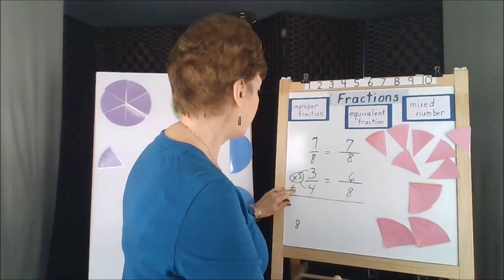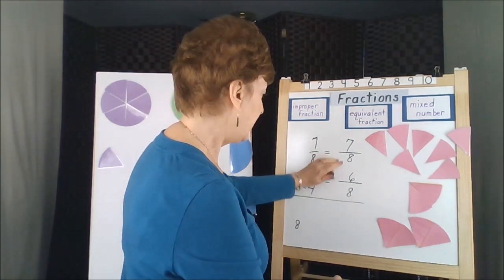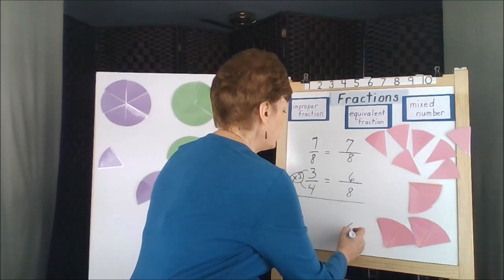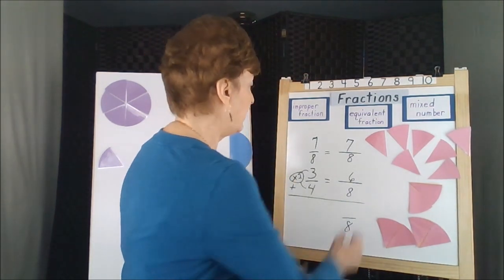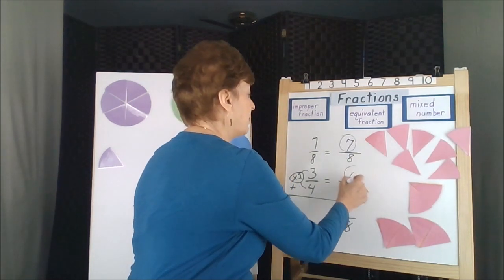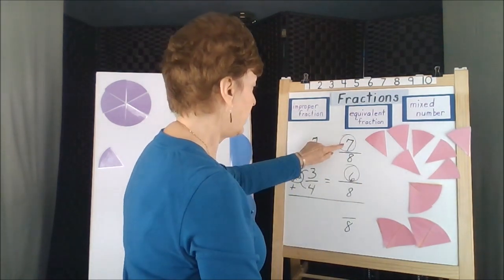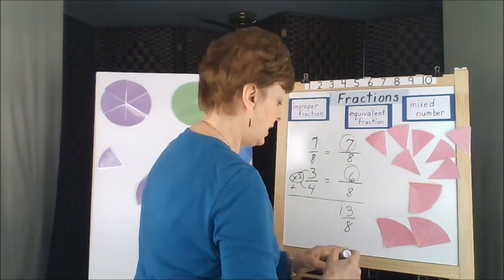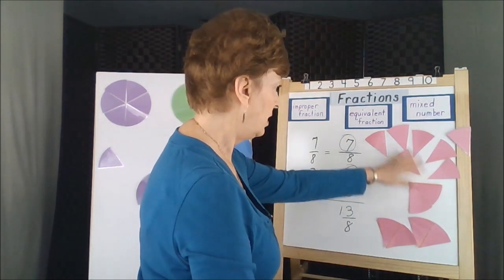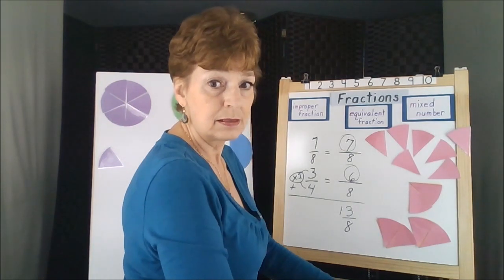We can then do our math. The denominators are the same. So I'm going to drop my eight into the answer. That's the denominator. And then add the top numbers, the numerators. Seven plus six is 13. This tells me that I have 13 of these eighths.